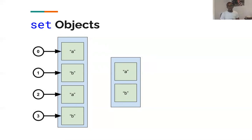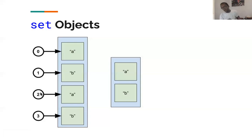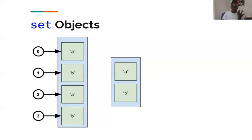In exactly the same way, sets allow us to solve a problem with lists. You can put duplicate items into a list and it won't complain — it accepts them and gives each a new index. Sets allow us to ensure that values are always unique, just as in mathematics where sets describe a collection of unique values. Sets in Python are exactly the same — they're actually mathematical analogues, and you can use them to perform set operations.